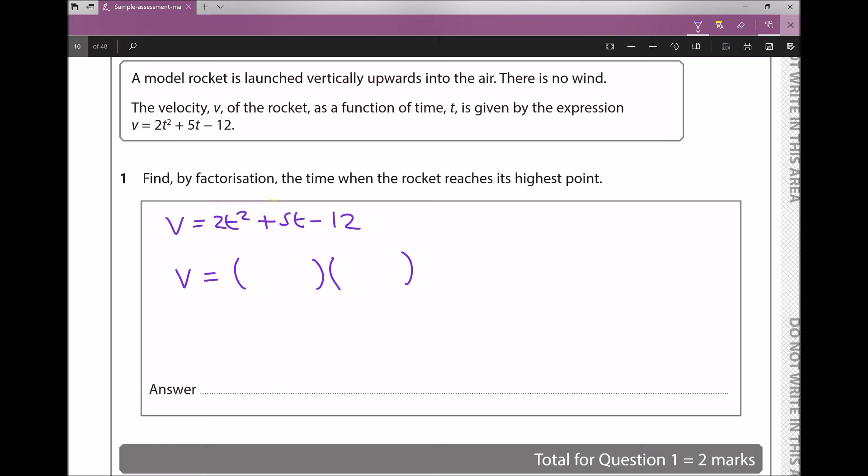In one of those brackets we're going to need 2t and in the other bracket we're going to need t. The reason for this is when we multiply those two terms together, 2t times t, we'll end up with our 2t². The next thing we know is that the coefficients going into each of those brackets need to multiply to give -12.